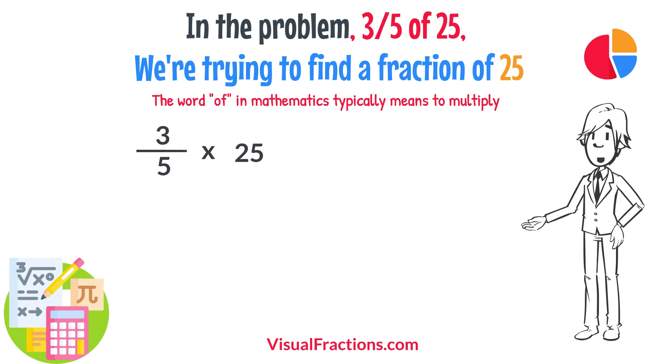To simplify the calculation, we first convert our whole number into fraction form, writing 25 as 25 over 1. This transformation makes it easier to work with our numbers as fractions.